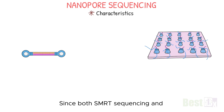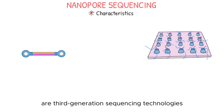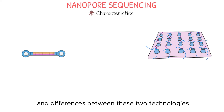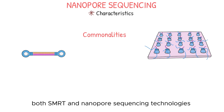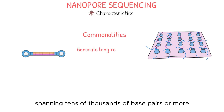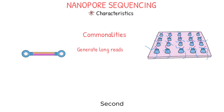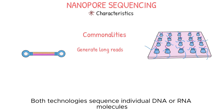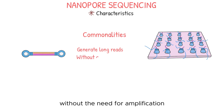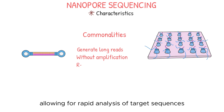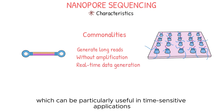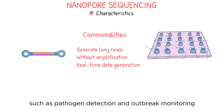Since both SMRT sequencing and ONT sequencing are third-generation sequencing technologies, what are the commonalities and differences between the two? The commonalities are: first, both SMRT and nanopore sequencing technologies generate long reads spanning tens of thousands of base pairs or more. Second, both technologies sequence individual DNA or RNA molecules without the need for amplification. Third, both can generate data in real-time, allowing for rapid analysis of target sequences, which can be particularly useful in time-sensitive applications such as pathogen detection and outbreak monitoring.